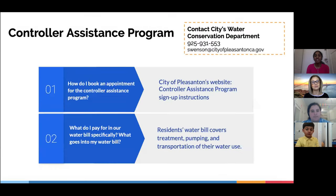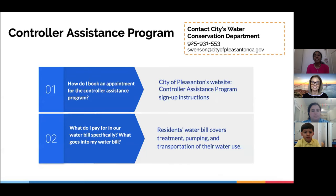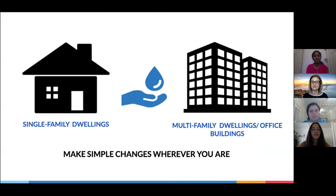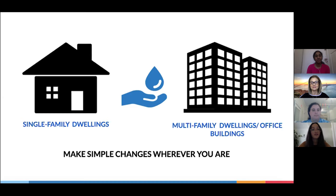There's also a resource available for Pleasanton residents called the Controller Assistance Program — you can call a technician for a no-charge consultation and advice to help efficiently program your water irrigation controllers. The evaluations take place over the phone or laptop and allow you a personalized walkthrough of your landscape with a technician. Information on how to sign up can be found on the City of Pleasanton website. Other ways to save include running full and fewer loads of laundry and dishes, taking shorter showers, and replacing high-maintenance lawns with drought-tolerant landscaping. Regardless of where you start, just keep moving forward in your water conservation lifestyle.